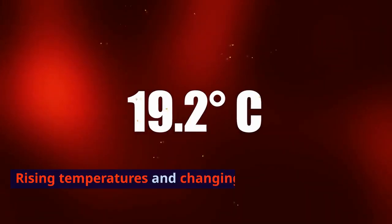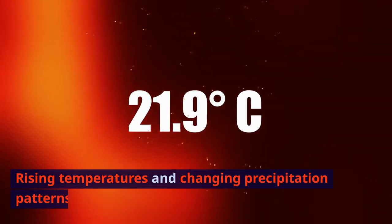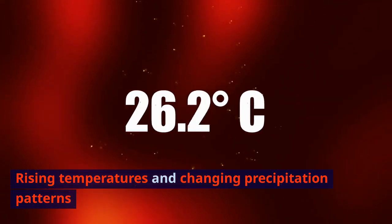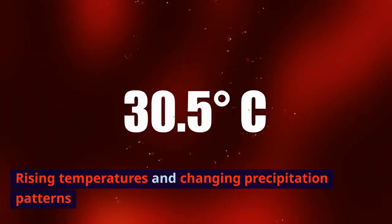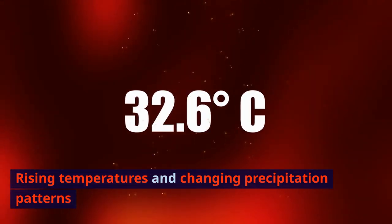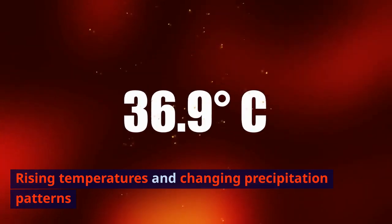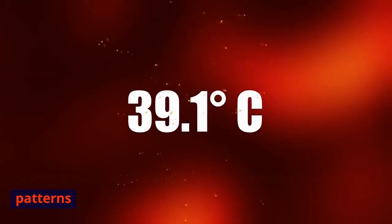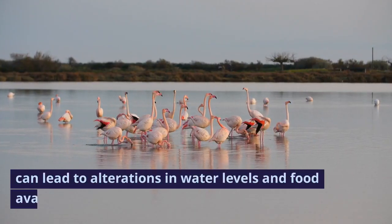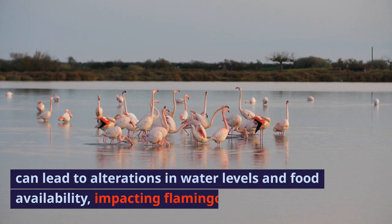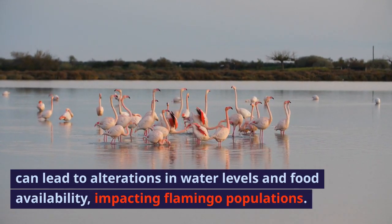Rising temperatures and changing precipitation patterns can lead to alterations in water levels and food availability, impacting flamingo populations.